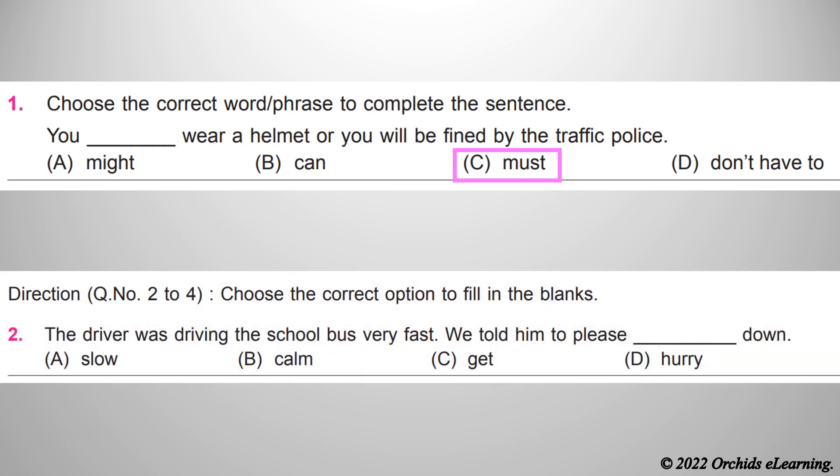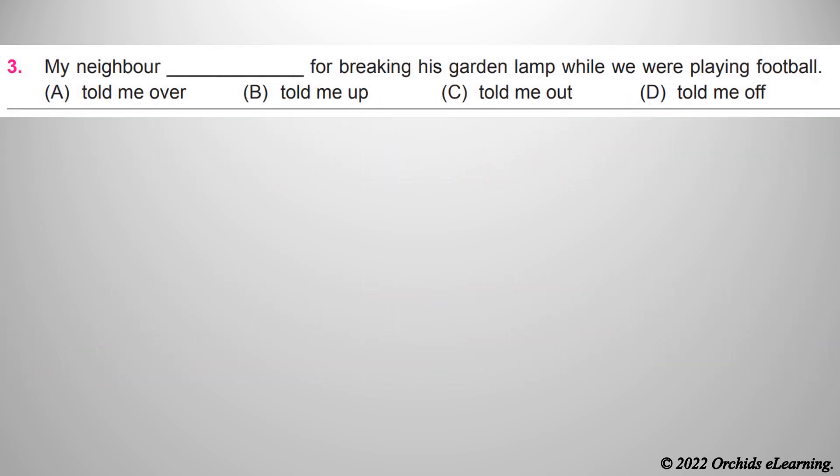Questions 2 to 4: Choose the correct option to fill in the blanks. Question 2: The driver was driving the school bus very fast. We told him to please slow down. Answer: A - slow. Question 3: My neighbor told me off for breaking his garden lamp while we were playing football. Answer: D - told me off.